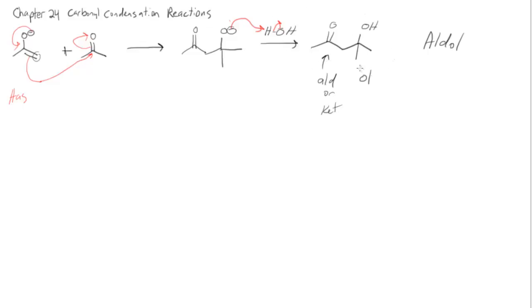And another way that we can name our aldol product, we have our carbonyl here. And then this is the alpha position of the carbonyl. This is the beta position of the carbonyl. So I can also name my molecule or my type of molecule as a beta hydroxy carbonyl. In this case it would be a beta hydroxy ketone.